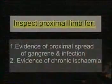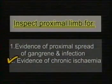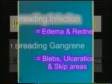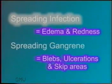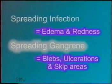Now inspect the proximal limb for evidence of proximal spread of gangrene and infection and for evidence of chronic ischemia. First, we look for proximal spread of the gangrene. Presence of redness and edema in the proximal skin suggests active infection as in a wet gangrene. The skin may show blebs, ulceration and black-colored skip areas suggesting proximal spread of the gangrene. This bleb, proximal to the gangrenous toe, indicates a spreading gangrene.